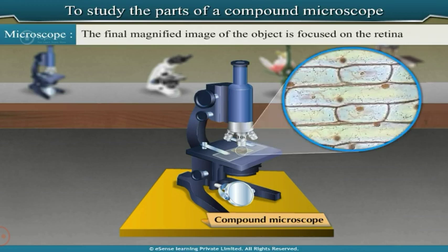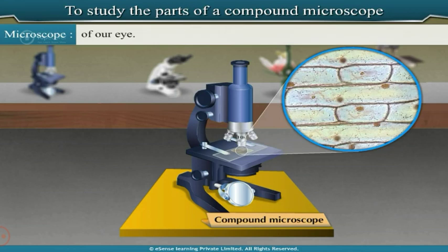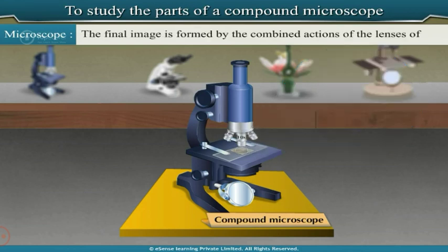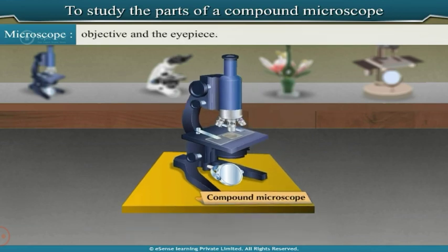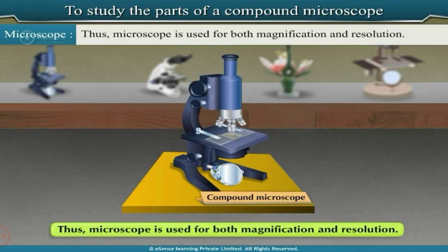The final magnified image of the object is focused on the retina of our eye. The final image is formed by the combined actions of the objective and eyepiece lenses. Thus, a microscope is used for both magnification and resolution.